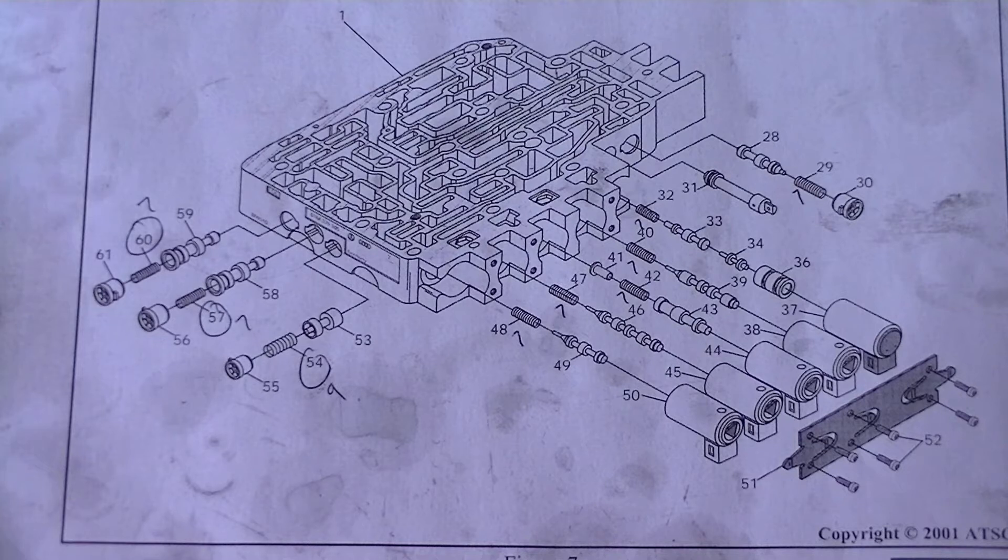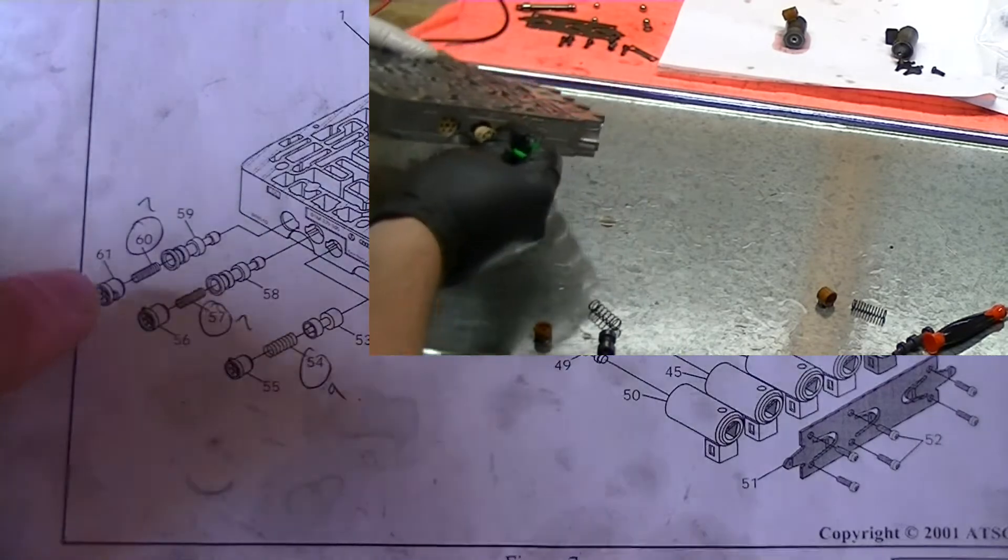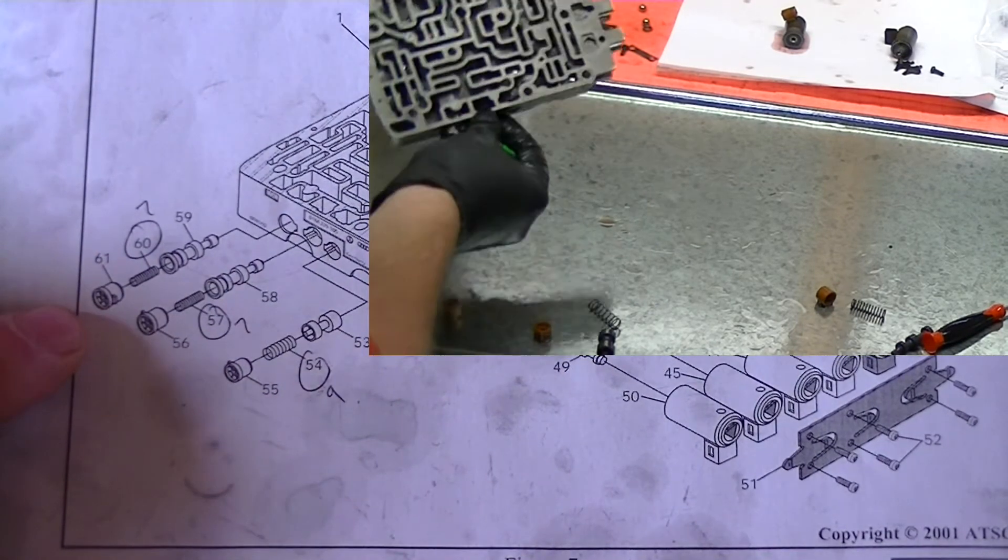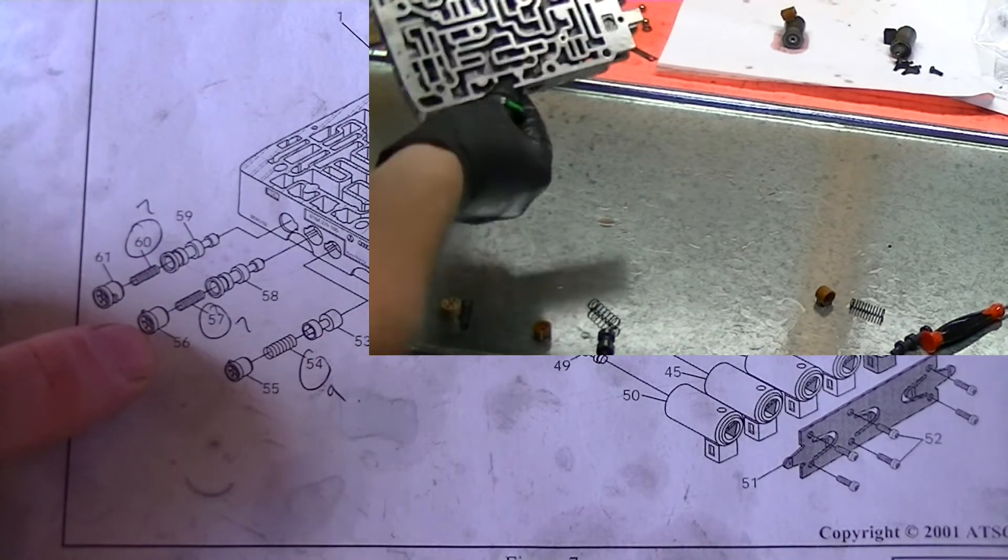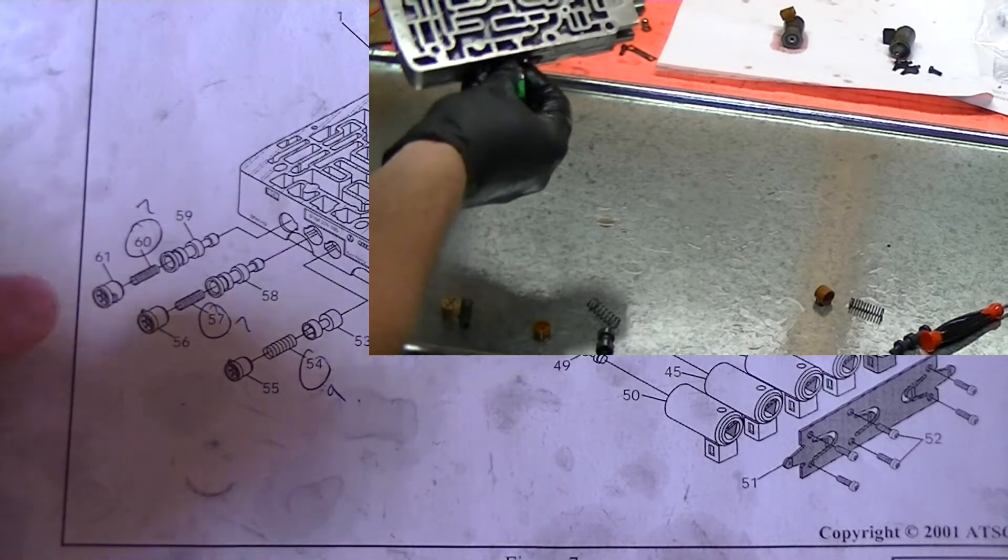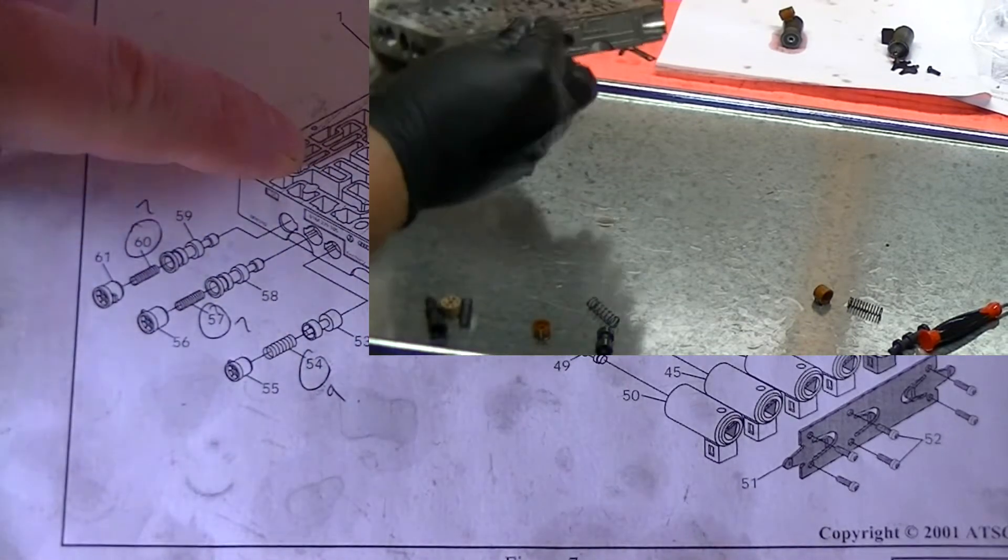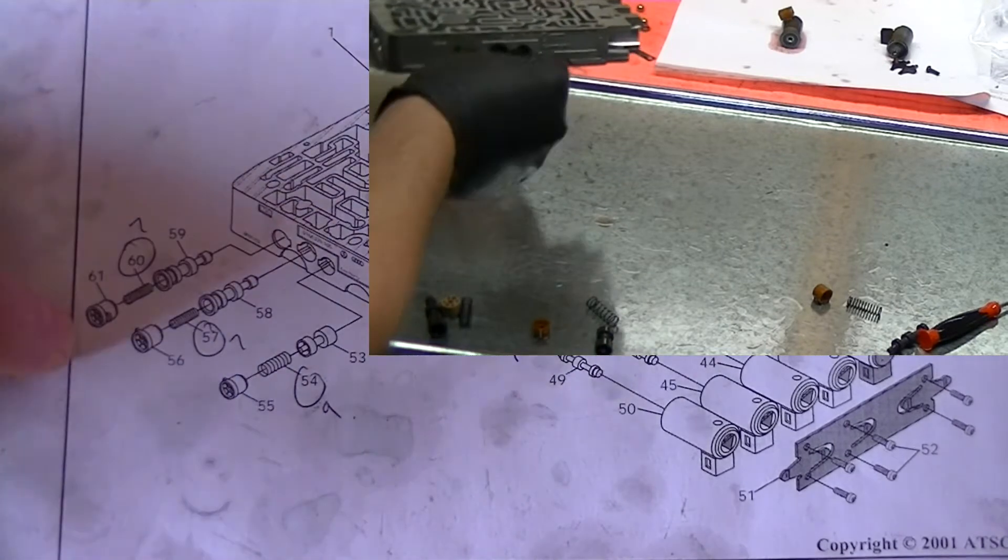So luckily I recorded the dismantle and you'll see from the video here how this end one actually came apart totally differently to this one and totally differently to the diagram. This one had the spring on the inside, the fat spring on the inside, then the valve, then the cap.